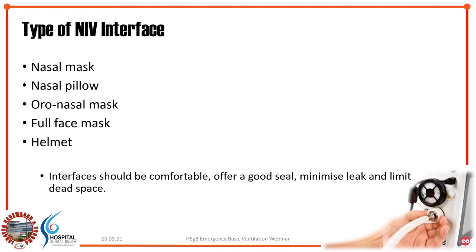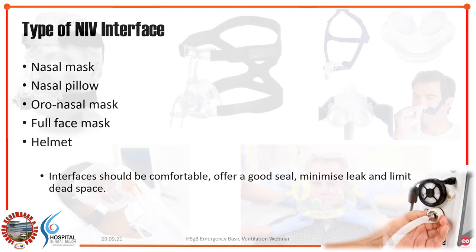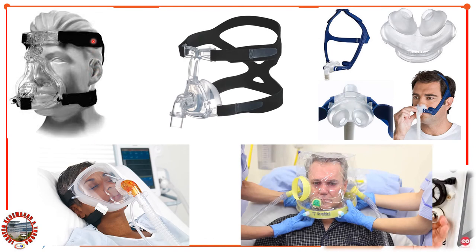There are different types of NIV interface: nasal mask, nasal pillow, oro-nasal mask or face mask, full face mask, and helmet NIV. Each interface has its own advantages and disadvantages. When choosing an interface, consider patient comfort, good mask seal, and minimizing leaks and dead space. The oro-nasal or face mask is the most commonly used type in the ED. Other options include nasal pillow, nasal mask, full face visor, and helmet CPAP.